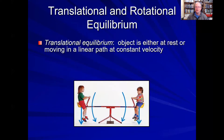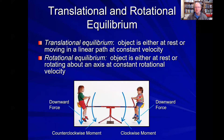Translational equilibrium means that the object is either at rest or moving in a linear path at a constant velocity. Rotational equilibrium means that the moments on either side of the axis of rotation are going to be exactly equal. In the situation of a little girl and a little boy on two sides of a seesaw, the counterclockwise moment from the girl must be exactly equal to the clockwise moment from the boy. When those two moments are exactly equal, the seesaw rests in a perfectly level position — that is rotational equilibrium.